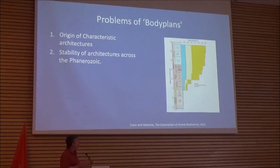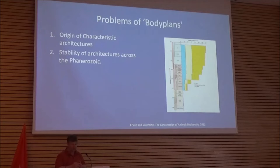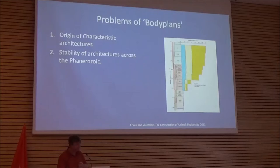The body plan problem can be decomposed into a bunch of different questions. One is: what are the origins of the characteristic architectures that we see? The second, which has become tightly related to it in a lot of the discussions, is: why are these architectures stable over apparently hundreds of millions of years? Why are arthropods arthropods in the Cambrian and arthropods today, instead of drifting off and becoming mollusks or something else?